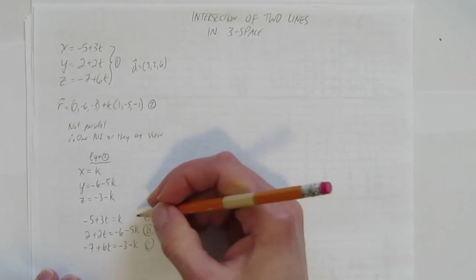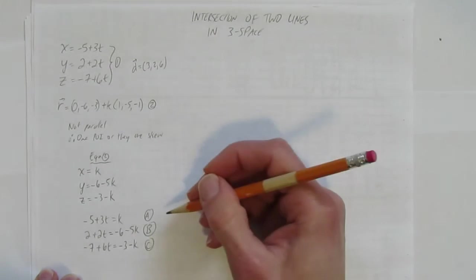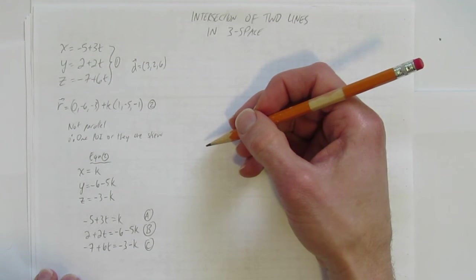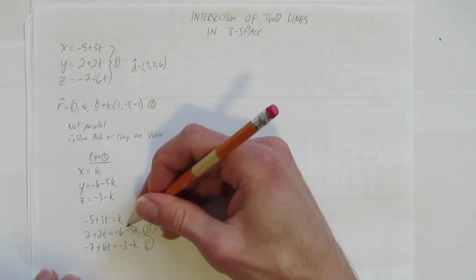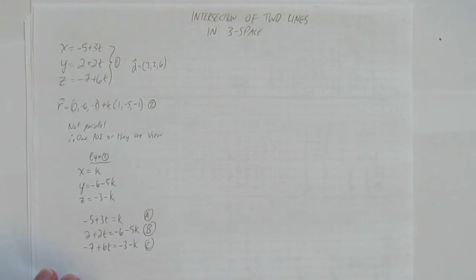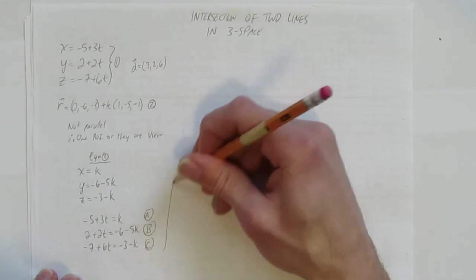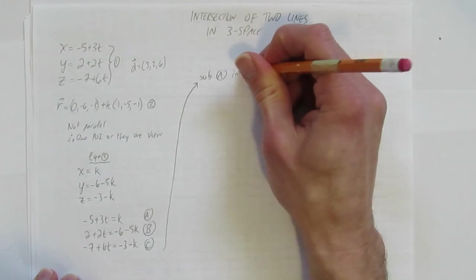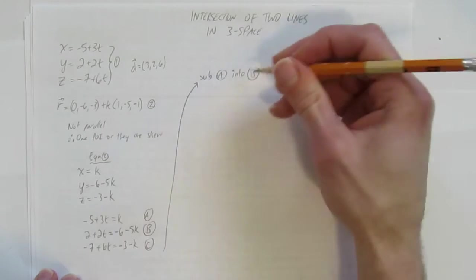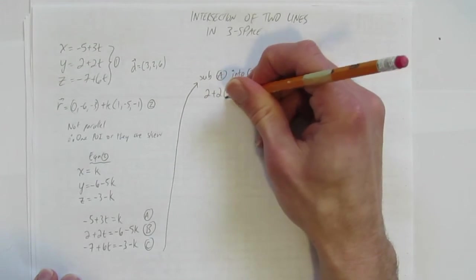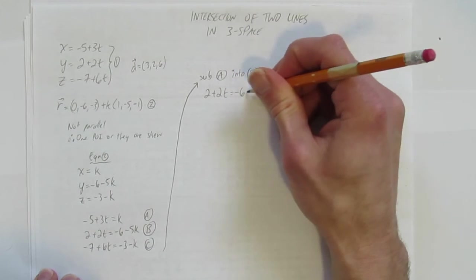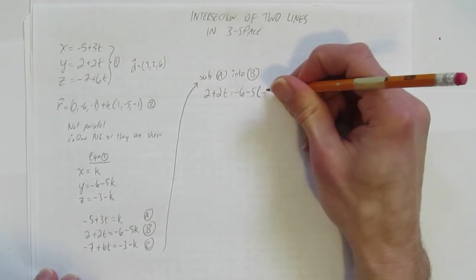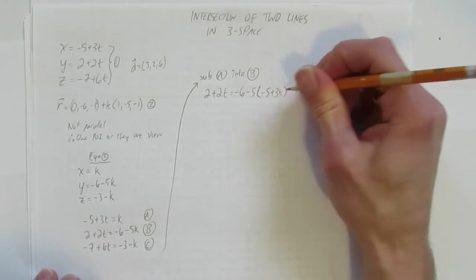So I'm going to solve these equations. I have three equations, two unknowns. That's going to help tell me if there is a point of intersection. We can work with any two equations. But what's really nice is equation A has k by itself already. I could do elimination if I wanted. But since I have k by itself, I'm going to use substitution. I'll go up here. Sub A into B. That is, I'm going to take equation B, 2 plus 2t equals negative 6 minus 5. But in place of k, I'm going to sub in equation A, and I get negative 5 plus 3t in there.